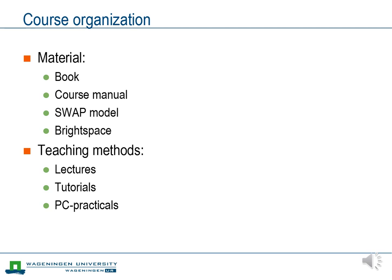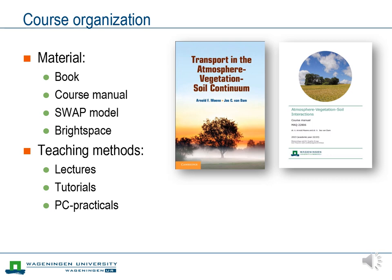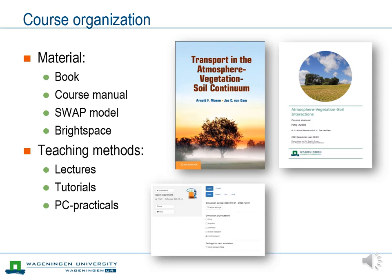Now it is time to give you some information about how the course is organized. The core of the course is the book Transport in the Atmosphere Vegetation Soil Continuum. With a few exceptions, the full contents of chapters 1–9 are part of this course. To support the course, we have made a course manual where you can find the course guides, additional exercises for the tutorials, two scientific papers related to the course, and the instructions for the PC practicals. In those practicals, we will use a numerical model that covers most of the processes discussed in this course — the Soil, Water, Atmosphere and Plant model, or SWAP model. This version of the model has been specifically developed for this course.